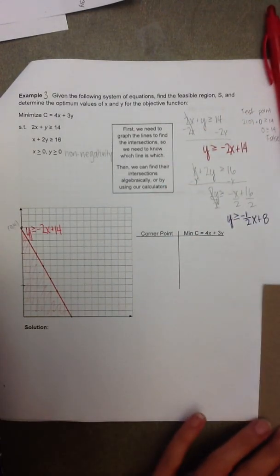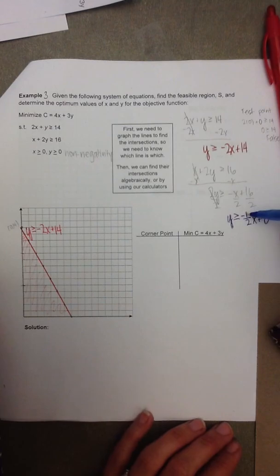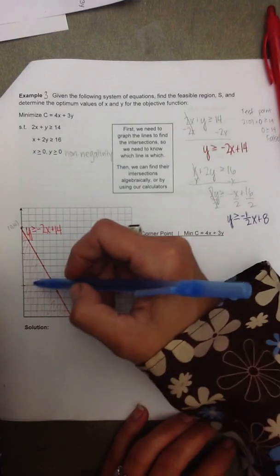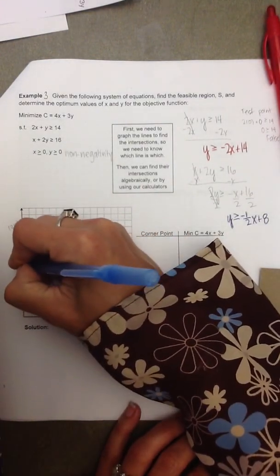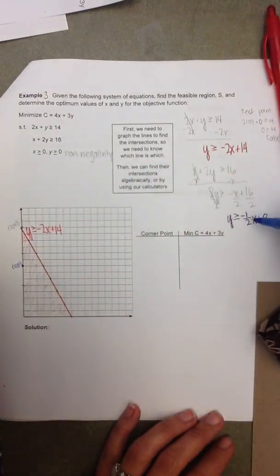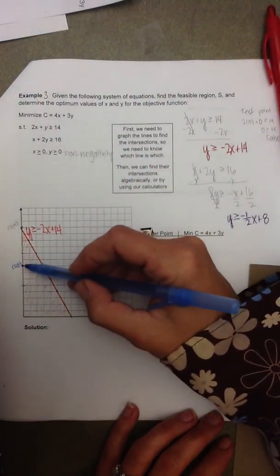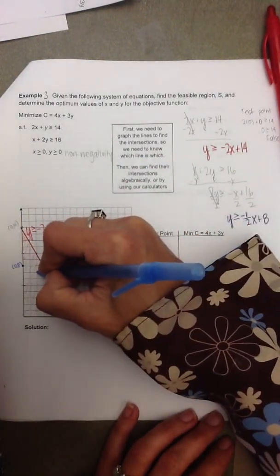Now when we move on to the second inequality, y is greater than or equal to negative 1 half x plus 8, I'm going to start with the y-intercept, which is the 0, 8.